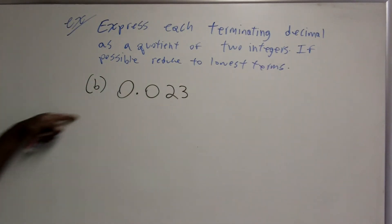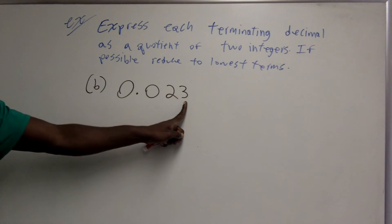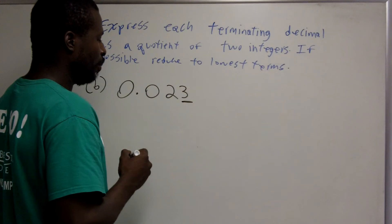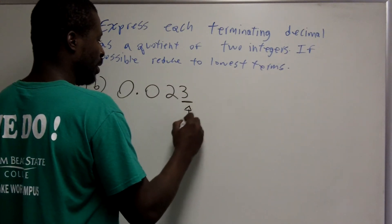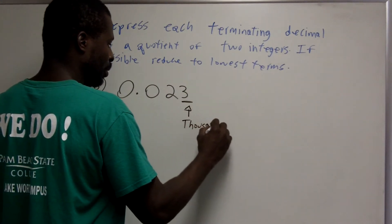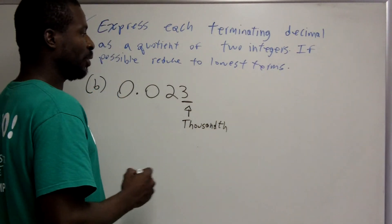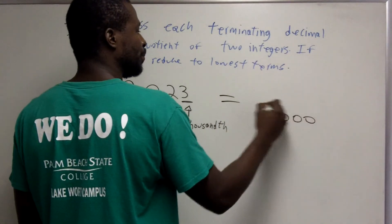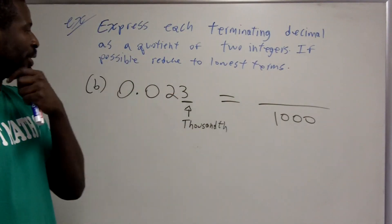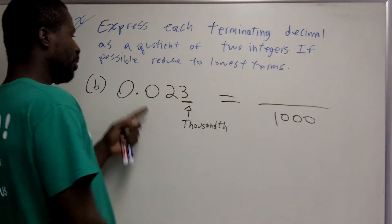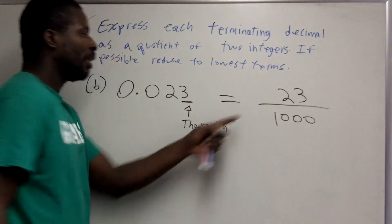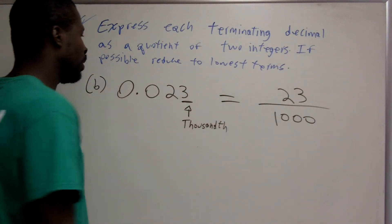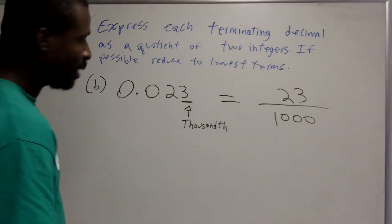Here we have another terminating decimal. We identify the place value of the last digit — in this case it's the thousandths place. So the denominator of the fraction is 1,000, and the numerator is 23, giving 23 over 1,000. That's already in lowest terms because 23 is a prime number and is not a factor of 1,000.